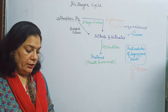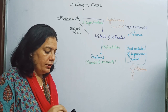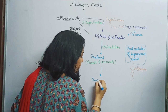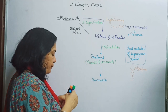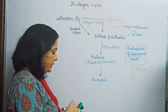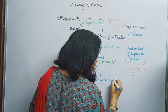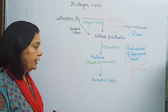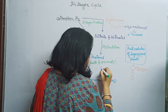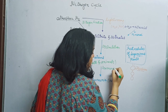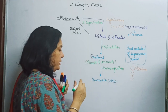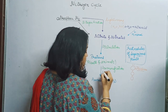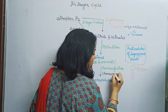When plants and animals die, and also through excretion, the nitrogenous compounds are converted into ammonia (NH3). The process of conversion of this usable form of nitrogen into ammonia is called ammonification. Again bacteria help in this process, and the name of the bacteria which help in this process are called ammonifying bacteria.